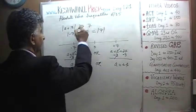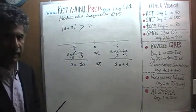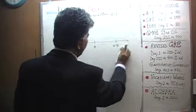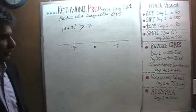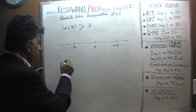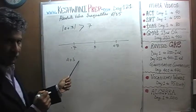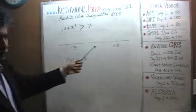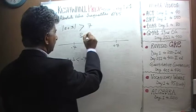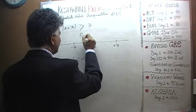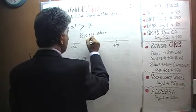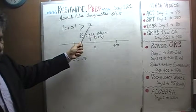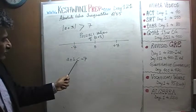The question is: what happens if we have something like this — if we are told that the absolute value of a plus 3 has to be more than 7? Here is our number line one more time. We have to ask ourselves where that would be true. The absolute value of a plus 3 is going to be more than 7 if a plus 3 is less than negative 7. Pay attention here — in order for the absolute value to be more than 7, a plus 3 has to be less than negative 7.